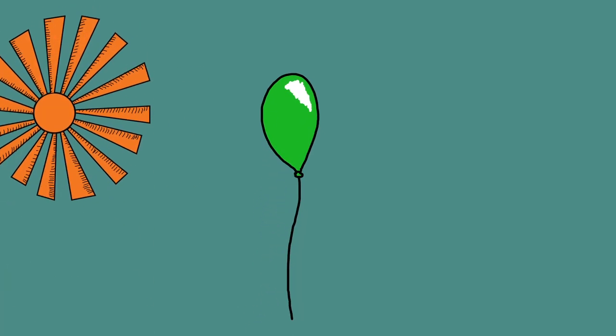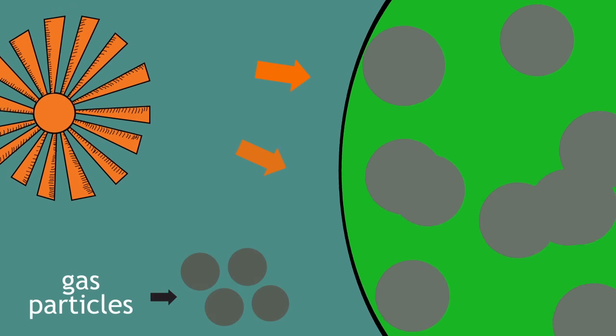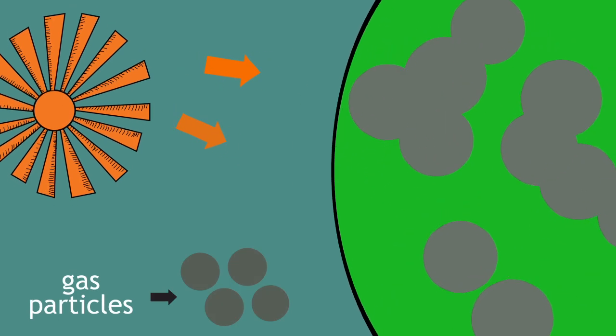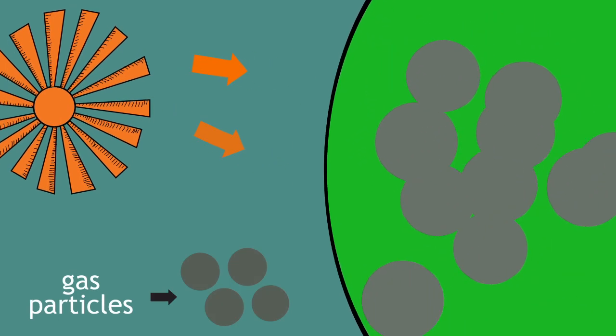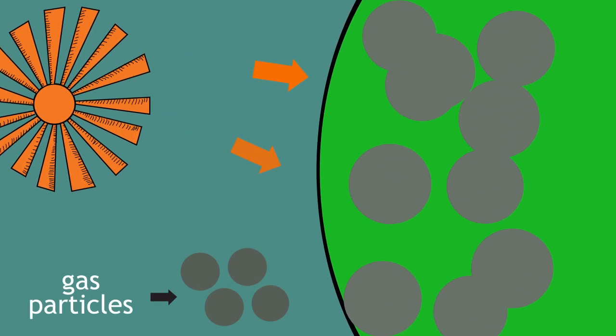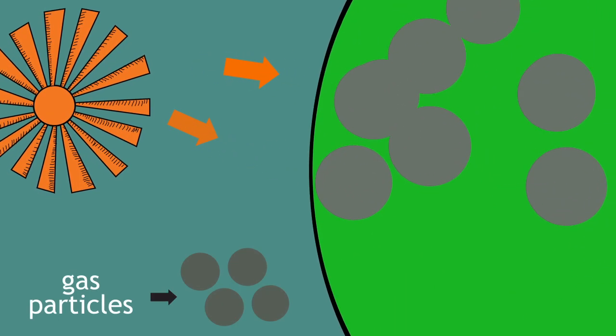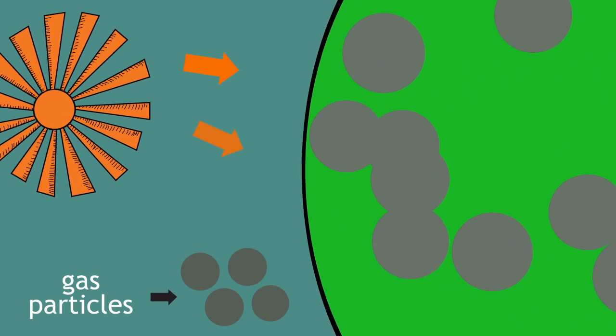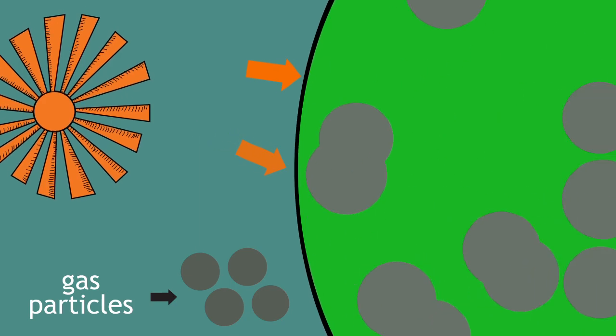If it's a hot day, the balloon sometimes pops randomly. This is because when heated, the spaces between the gas particles in the balloon expand until the balloon can expand no more — and bang, the balloon bursts.